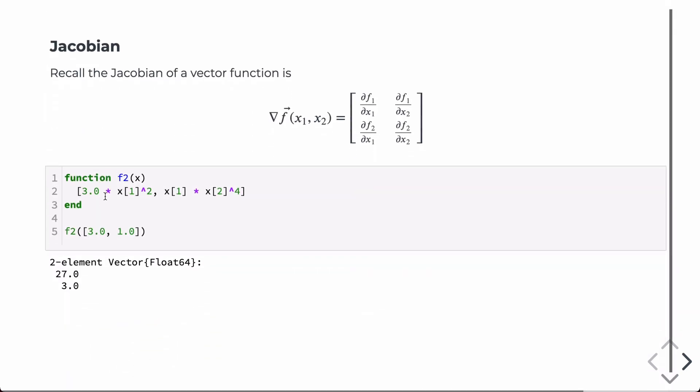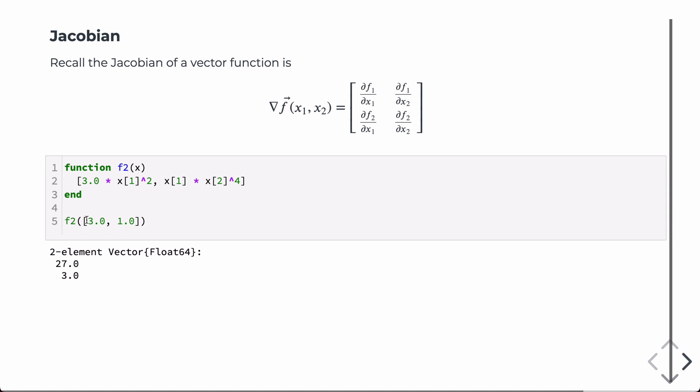So finally, we can also do Jacobians in the same way. So in this case, now I have a function that takes a vector x and returns a vector. So then the Jacobian is this type of operation. Again, just demonstrating the function call. So if I put in two values for x1 and x2, then I get these two values in return, and then I can call the Jacobian like so, passing that along with the values of x, and then I get a matrix as a result, computing this result.